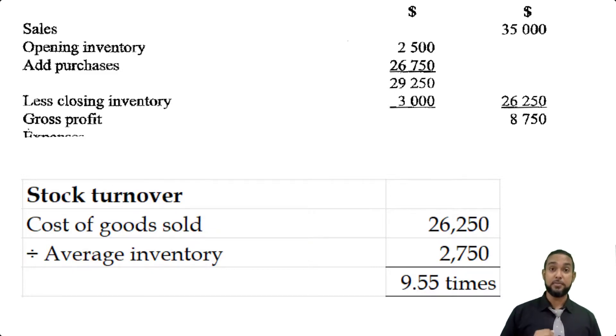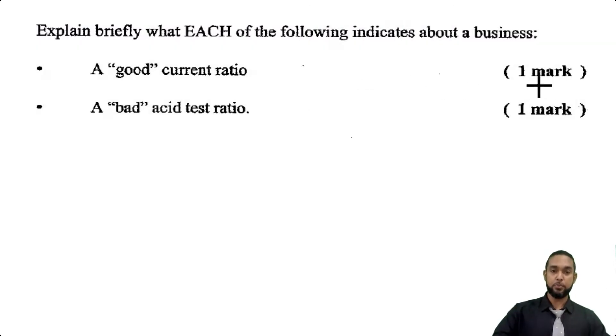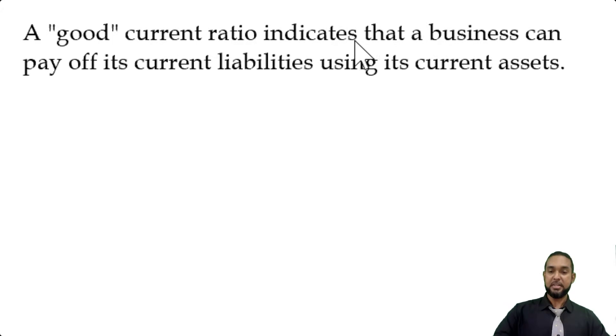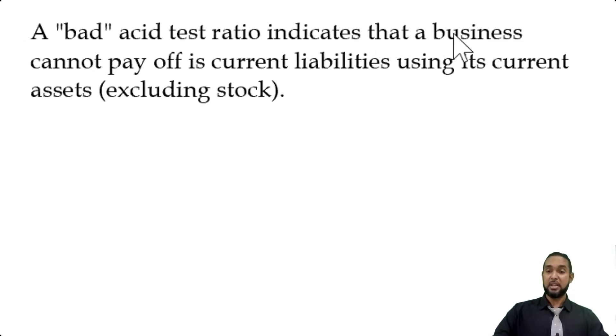They're asking us to explain briefly what each of the following indicates about a business: a good current ratio and a bad acid test ratio. A good current ratio indicates that a business can pay off its current liabilities using its current assets. A good current ratio is usually above 1 to 1 or even 1.5 to 1. A bad acid test ratio indicates the opposite—that a business cannot pay off its current liabilities using its current assets, excluding stock.